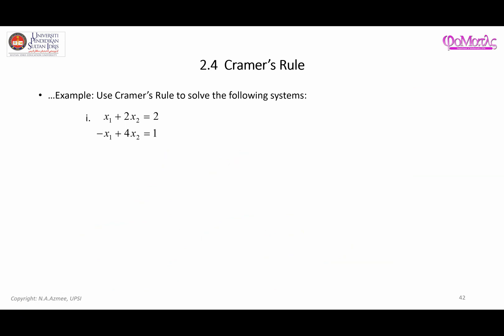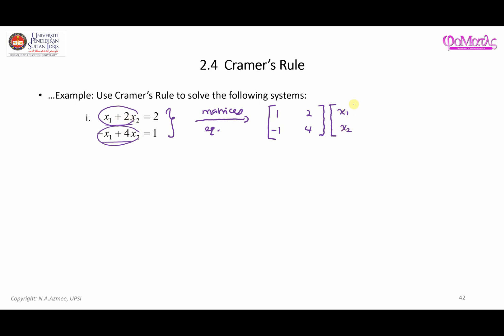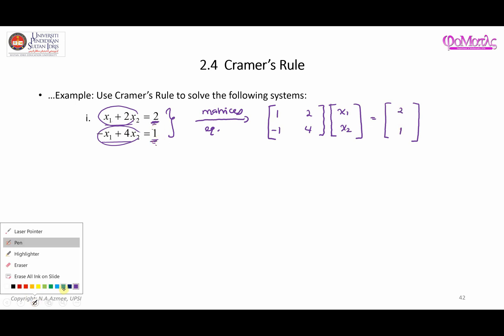Here is the system, and from this system you can see that it is possible to write it in terms of a matrix equation. Here is matrix A, which contains the coefficients. For the first row we have 1 and 2; for the second row we have -1 and 4. That is matrix A. Next to it we write the unknown variables x1 and x2, then on the right-hand side is matrix b with constants 2 and 1. So this is A, this is the matrix of unknowns, and here is matrix b.